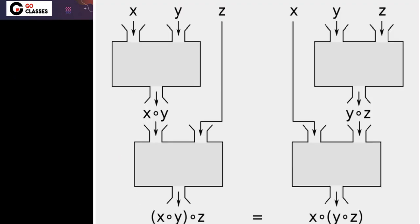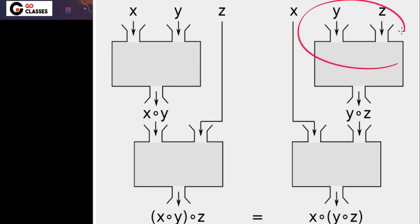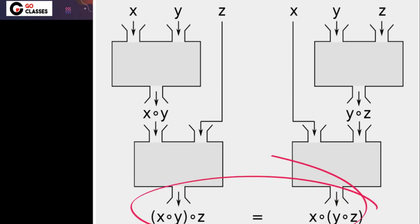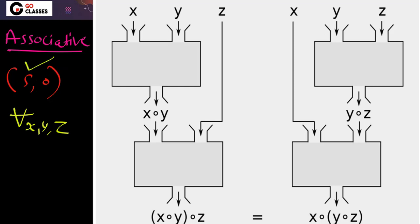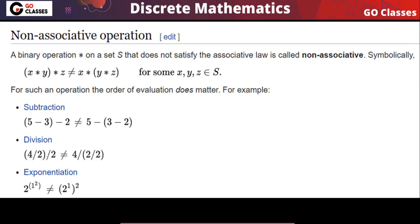Associative property means whether you first do x star y and then star z, or whether you first do y star z and then perform the operation with x, the result should always be the same. So for all x, y, z this should hold: (x star y) star z equals x star (y star z). This is the definition of associative property. Binary operation means closure property — it is a closed operation on your base set.